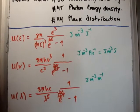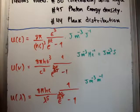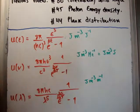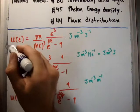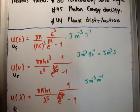Let's do a quick recap on the photon energy density, because I think this is important. In video number 45, I derived three different ways of writing the electromagnetic energy density. You must integrate the electromagnetic energy density in order to calculate the total energy. The first thing I showed was U of E — another way of writing it would be U sub E — and U of nu and U of lambda.